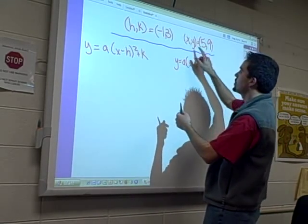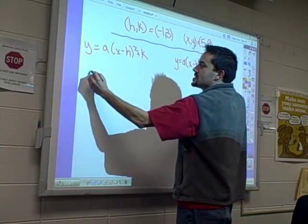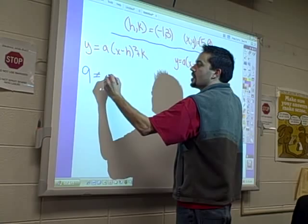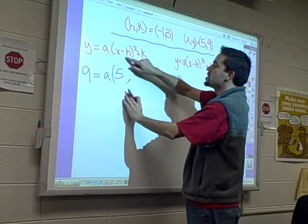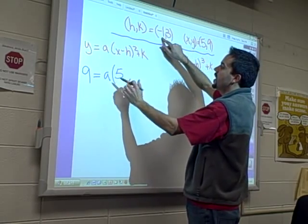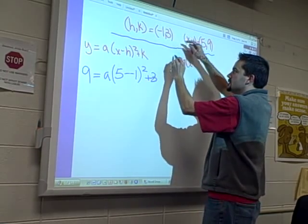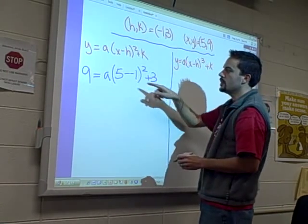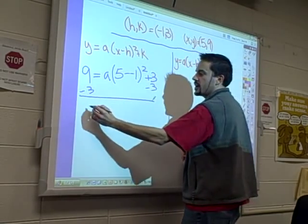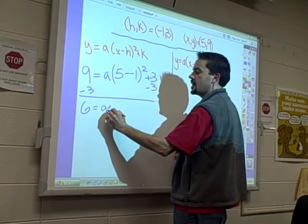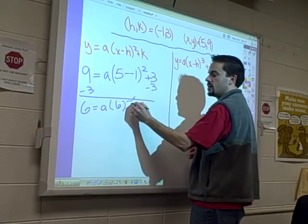The process is as simple as it gets. Take out these four letters, plug in these four numbers. y is nine, a is what we're solving for, x is five, h is negative one, k is three. I'm going to subtract three from both sides. I have to go through the algebra to solve for a. I get six equals a times five minus negative one is positive six squared.